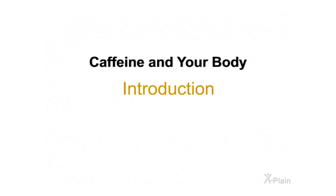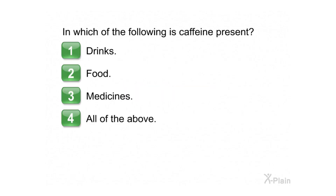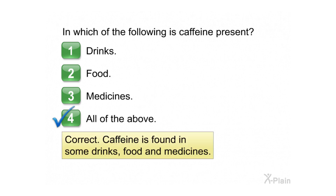Caffeine and your body — introduction. In which of the following is caffeine present? Choose one of the following options: one, drinks; two, food; three, medicines; four, all of the above. Correct! Caffeine is found in some drinks, food, and medicines.